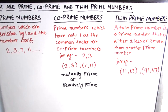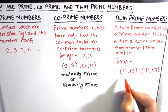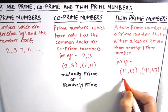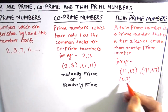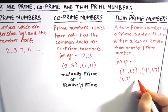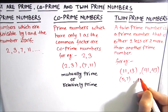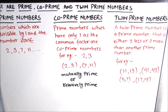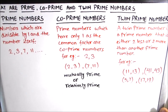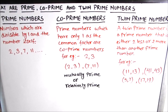So numbers which have a prime gap of 2 are called twin prime numbers. Other examples include 5 and 7, 17 and 19, and so on. This is all about the different types of prime numbers.